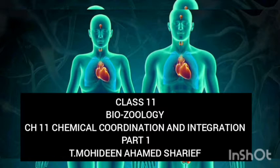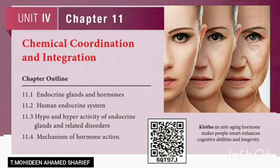This lesson is all about endocrine glands and hormones, the human endocrine system, hypo and hyperactivity of endocrine glands and related disorders, and mechanism of hormone action. The learning objectives are: first, to understand the positions of the various endocrine glands and their secretions; next, to learn the mechanism of hormone action; then to understand the disorders related to hypo and hyperactivity of the endocrine glands; and to learn about the role of gastrointestinal hormones.